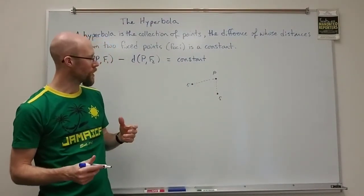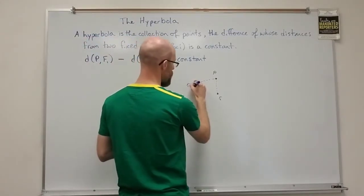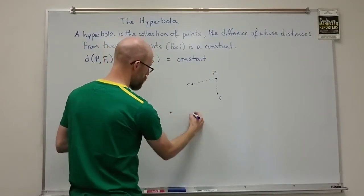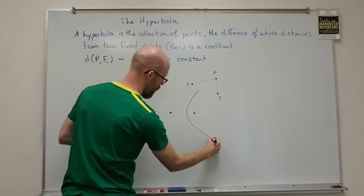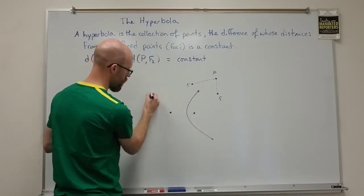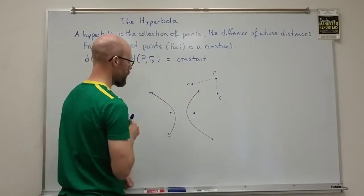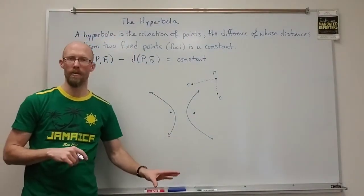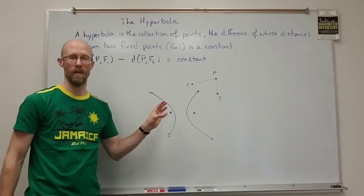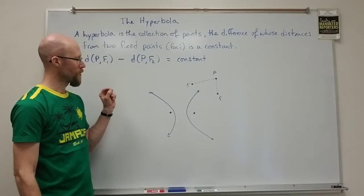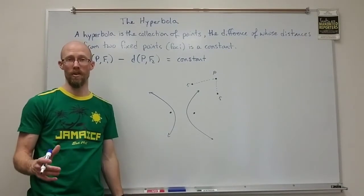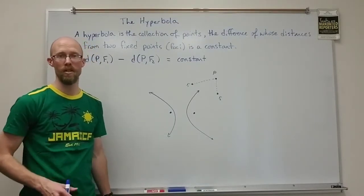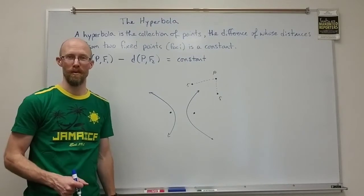If you fix that distance, the graph of the hyperbola between any two foci is going to have a shape that kind of goes around the two foci. That can be derived — I'm not going to go through all the details because I went through a lot of the derivation details for the parabola and ellipse equations. I'm going to skip a lot of those details with the hyperbola just to save time.